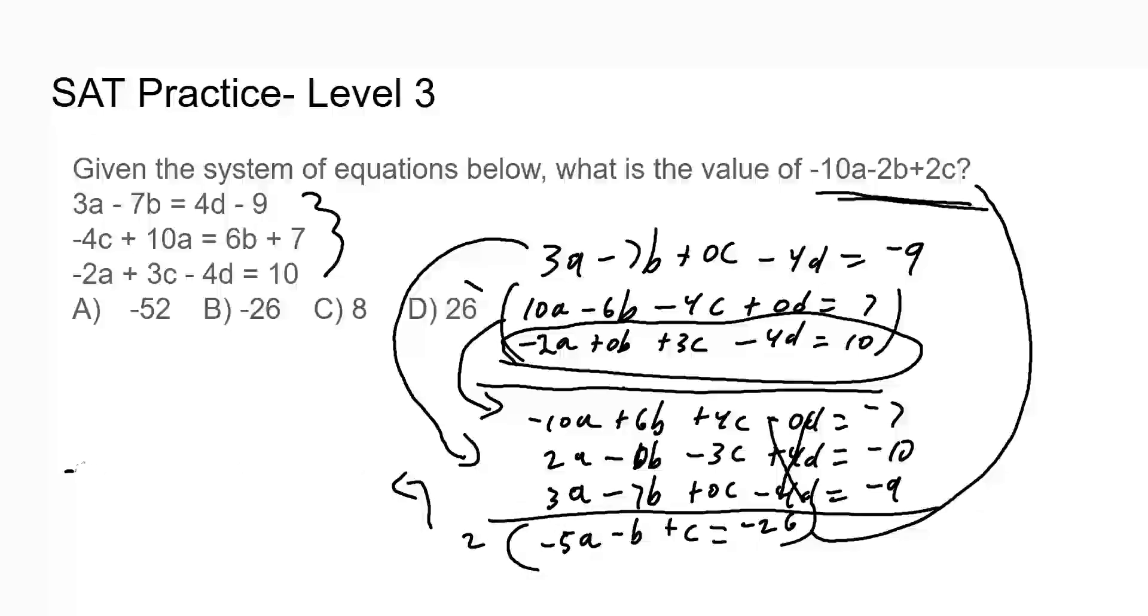2 times negative 5A is negative 10A. 2 times negative B is minus 2B. 2 times C is plus 2C equals 2 times negative 26 is negative 52. And look at that. This is exactly the same as this. What does that equal to? Negative 52. A.